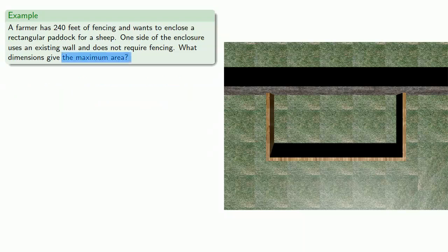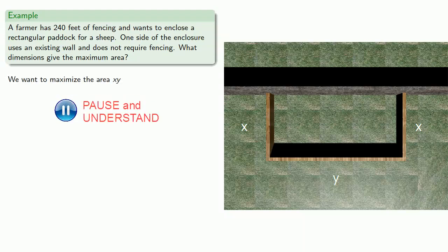We want to maximize the area, so let's put down variables representing our length and width. And in a spasm of creativity, we'll call one x and the other y. So we want to maximize the area xy. And since the 240 feet of fencing have to go along three sides of the paddock, the constraint is that 2x plus y equals 240.